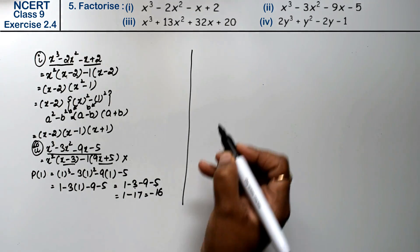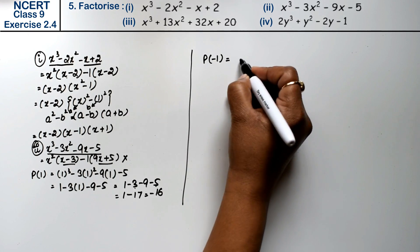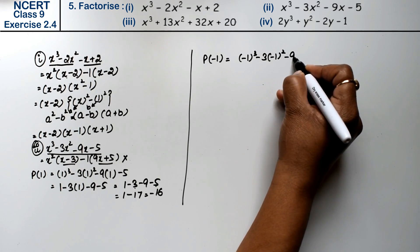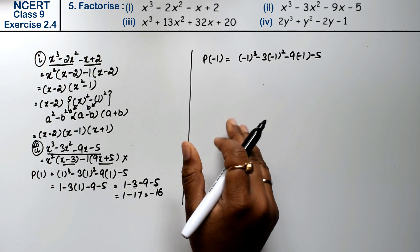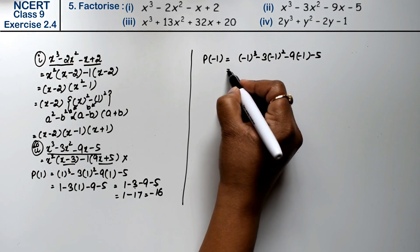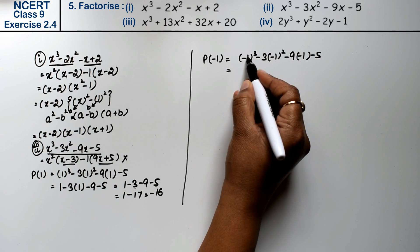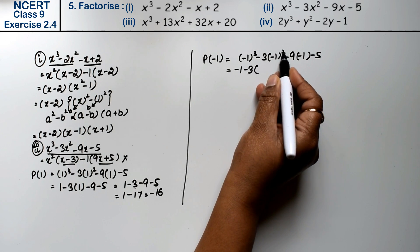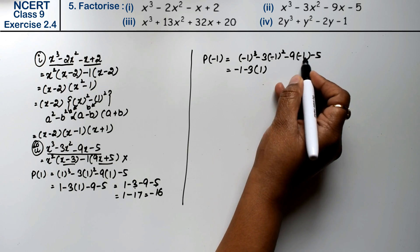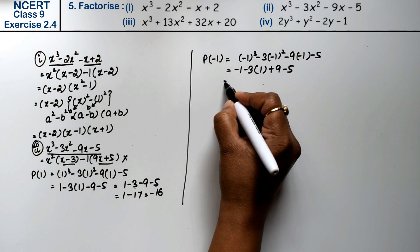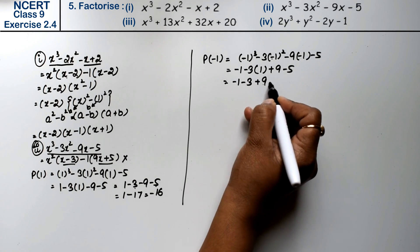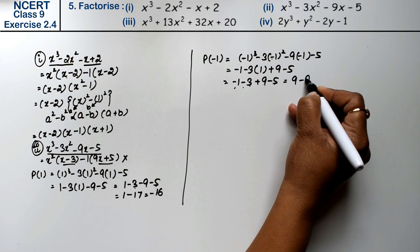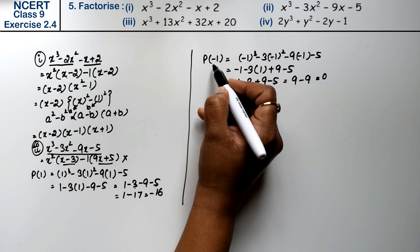Now we keep the value of x equal to minus 1. So: minus 1 cubed minus 3 times minus 1 squared minus 9 times minus 1 minus 5 equals minus 1 minus 3 plus 9 minus 5. The positives are 9 and the negatives are 1 plus 3 plus 5 equals 9. So nine minus nine equals zero. That means minus 1 is a factor.